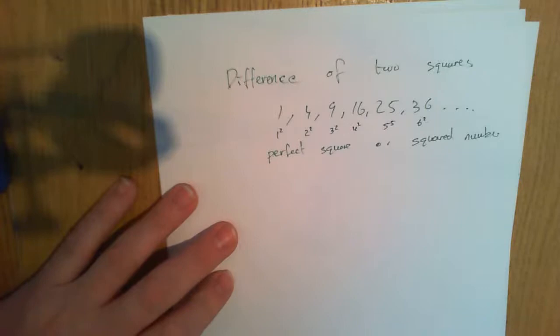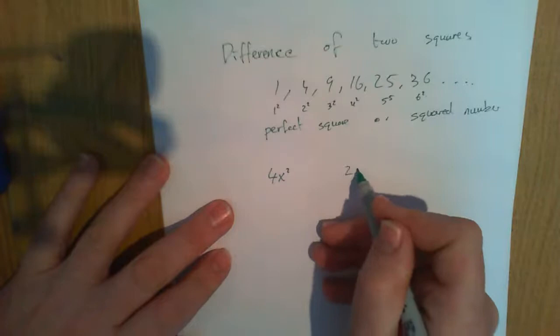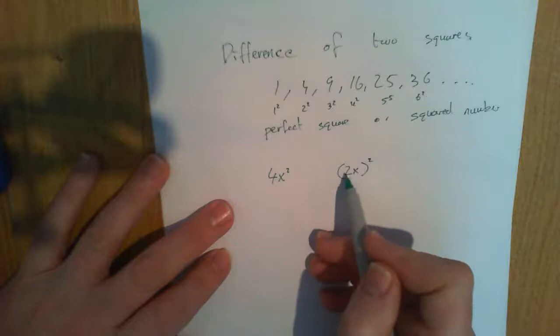Now, in algebra, we also have numbers that are perfect squares. For example, 4x squared.